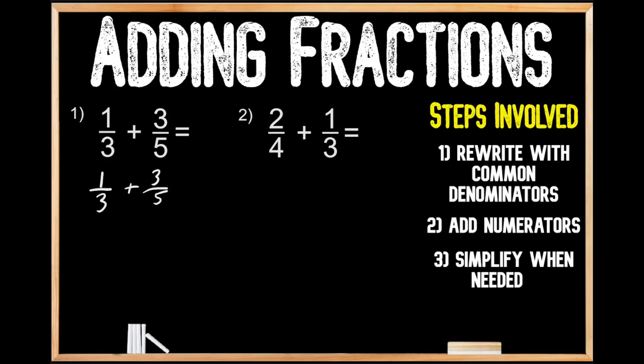Now we need to find a common denominator. If you're unsure how to do this, I encourage you to pause the video and look at the video links in the description below where we go over this topic in more detail. For this video, we're going to find a common denominator by multiplying our denominators. When we multiply three times five we get 15, so we're going to rewrite these fractions with a common denominator of 15.